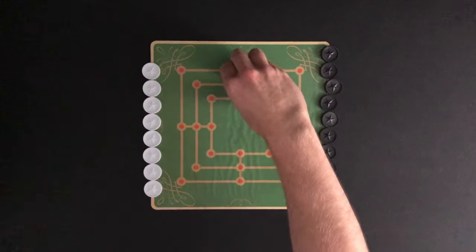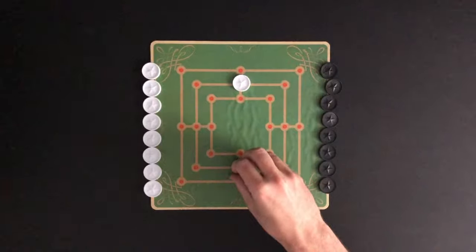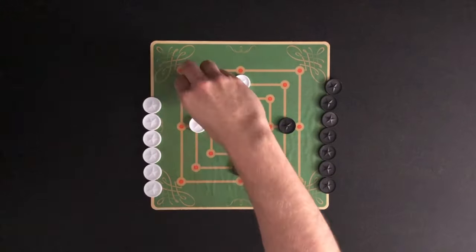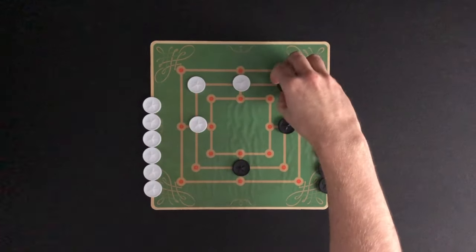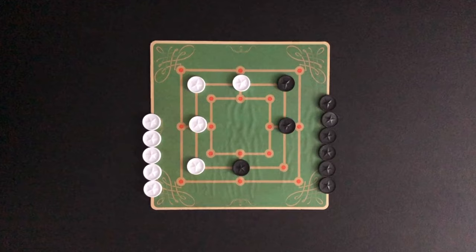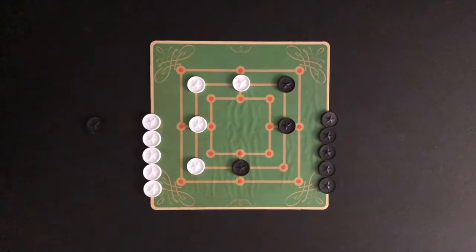The game starts with white placing their first marker. Players then take turns placing markers with the goal of trying to get three in a row or preventing their opponent from getting three in a row. Here, white gets three in a row and will choose one black marker to remove from the board. Play returns to black with players continuing to place their markers.